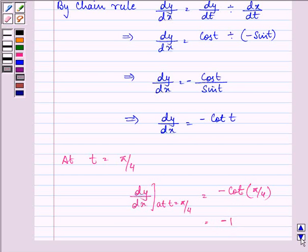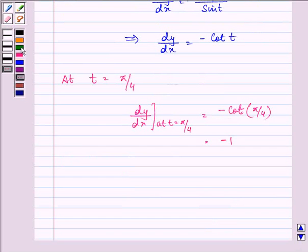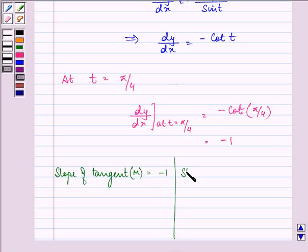That means we have the slope of tangent, and slope of tangent that we take as m is minus 1 and slope of normal that is minus 1 upon m will be minus 1 upon minus 1 which will give us the value as 1. Now, with the help of the slopes we can find out equations.